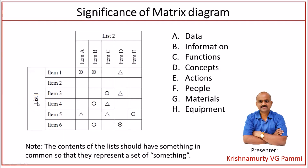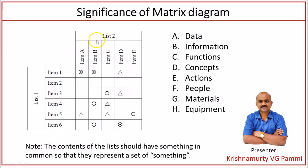Let us understand the significance of the matrix diagram. It consists of two lists: list 1 with item 1 to item 6 on one dimension, where all items should have something in common and together represent a set. Similarly, list 2 on another dimension consists of item A to item E, which also share something in common and together represent another set.